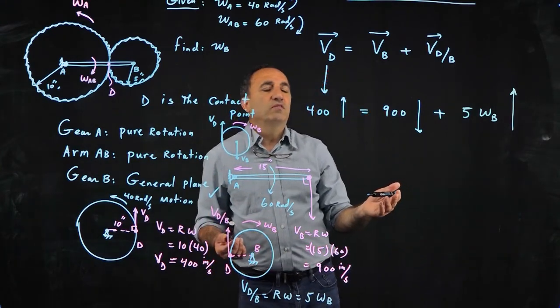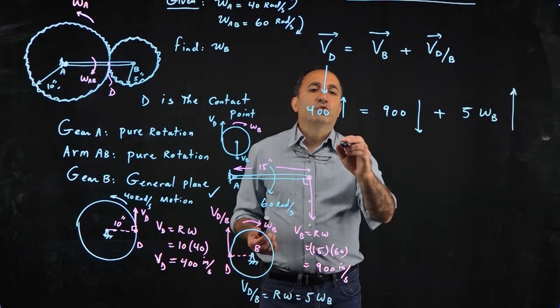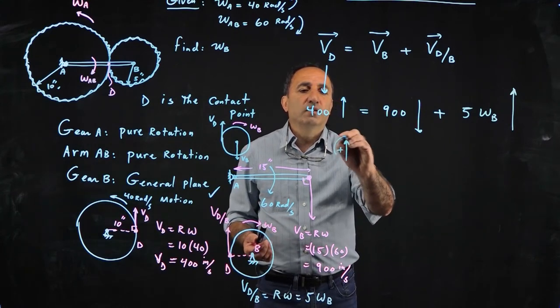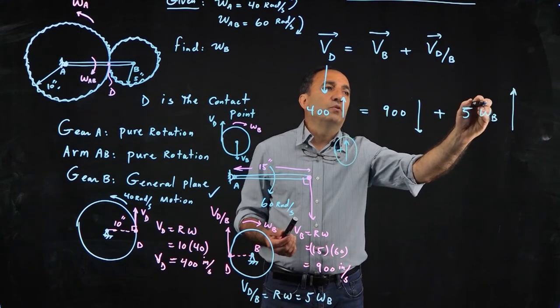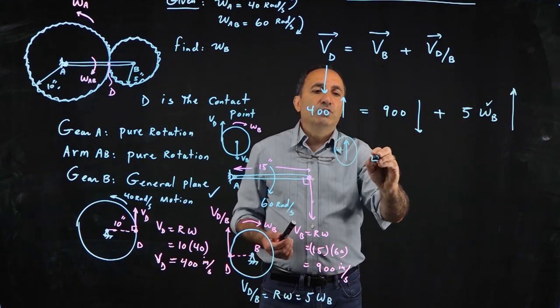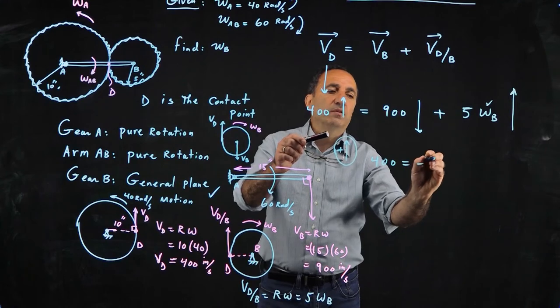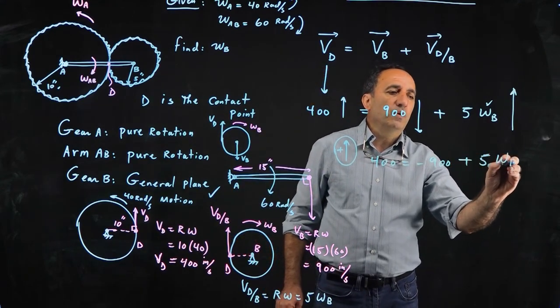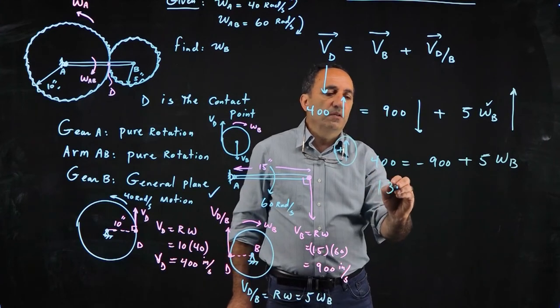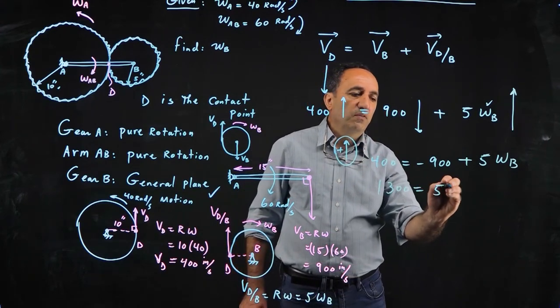So now look, this is a really simple problem. All I have to do is to pick a direction. There's only one component, vertical component, and one unknown here. So 400 positive minus 900 on the right hand side, plus the 5 omega B, which is positive, and then we get 1300 equal 5 omega B.